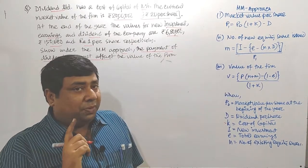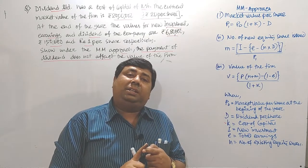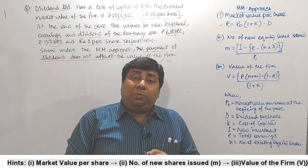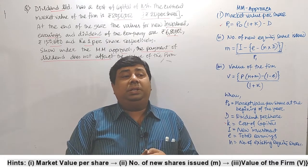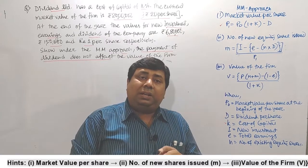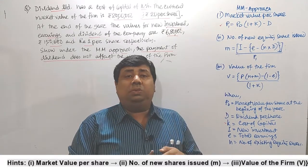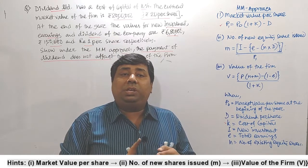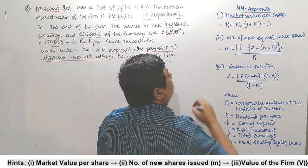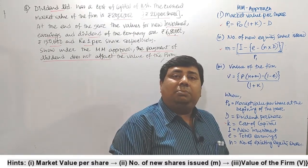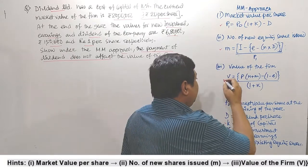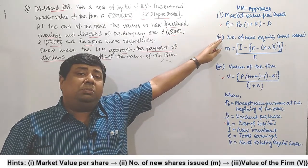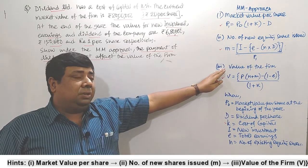Whenever we solve these kinds of questions, we need to follow three stages. In the first stage, we calculate the market value per share at given conditions — that is P1. In the second stage, we calculate how many new shares the company needs to issue to fulfill the given conditions — known as M. Finally, in the third stage, we calculate the market value of the firm, denoted as V.